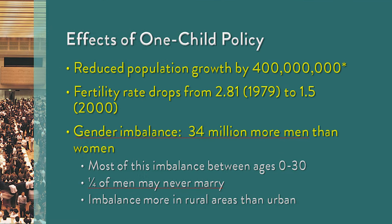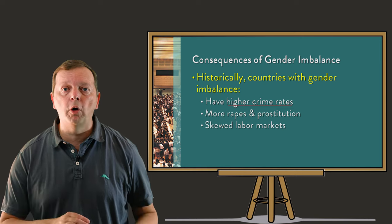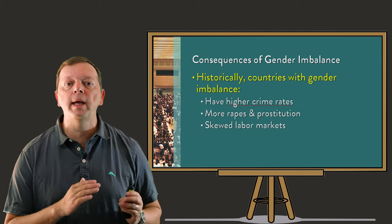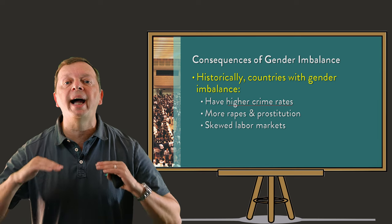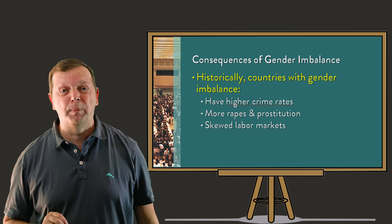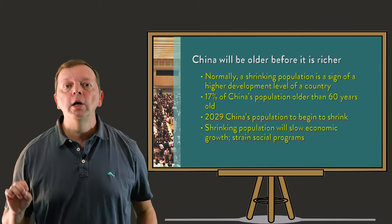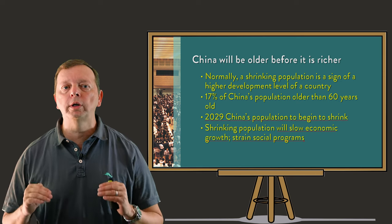Because of this, it is estimated that a quarter of young men today will never be able to find a woman to marry. Beyond potentially skewing the labor market toward men, historically countries with a high gender imbalance have higher crime rates, including rape and prostitution. And with such a low birth rate, China is becoming an older and older country.